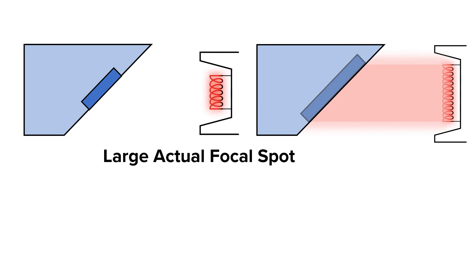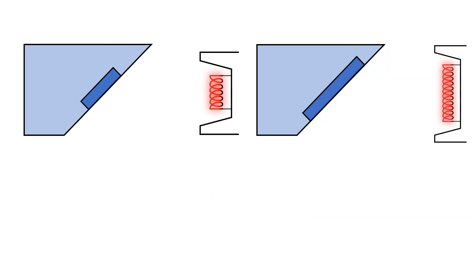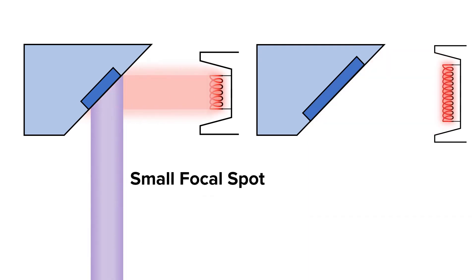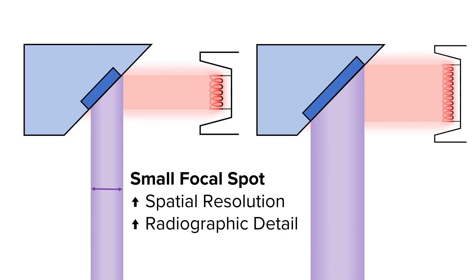The large actual focal spot also has a handful of pros and cons. A few pros of the large actual focal spot are that it is great at dissipating heat because more of the anode surface is being used, it is good at imaging thick body parts, and it is good when you need to use a short exposure time. However, a con of a large actual focal spot is that it produces a large effective focal spot. The huge benefit of a small effective focal spot is an increase in spatial resolution and thus greater detail.